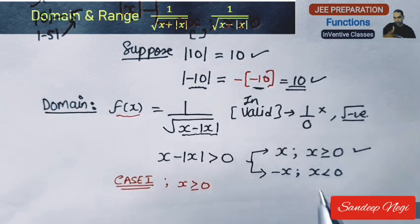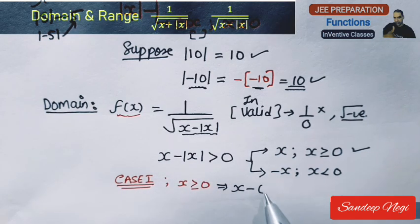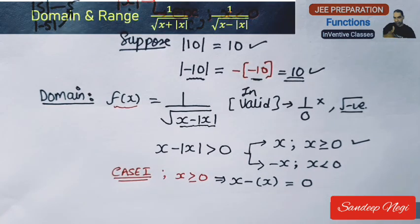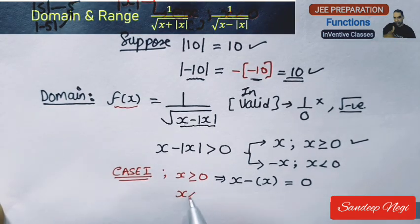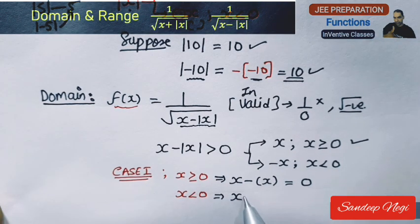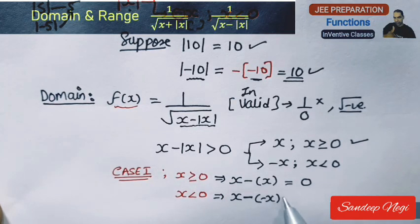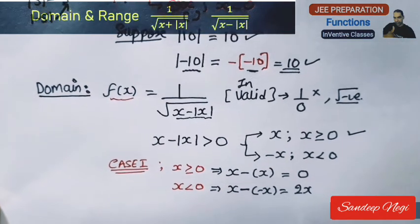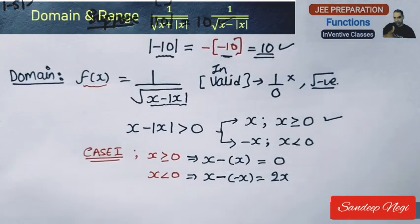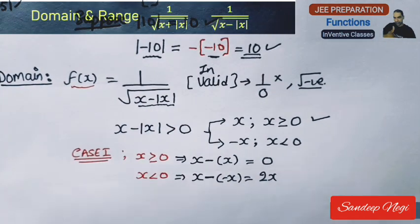Case 1: when x is greater than or equal to 0. Here x minus mod x becomes x minus x, which equals 0. Case 2: when x is less than 0, here mod x becomes minus x, so x minus mod x becomes x minus (minus x) which gives 2x.